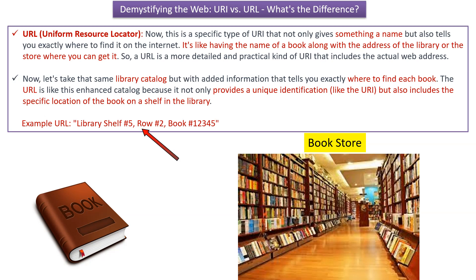Here you can see the example of URL: library shelf 5, row number 2, book number 12345.